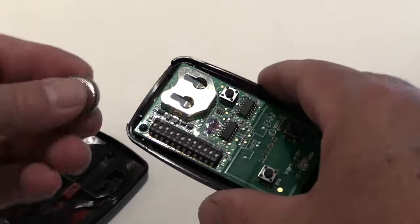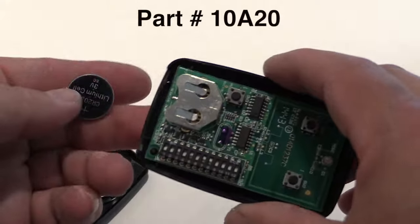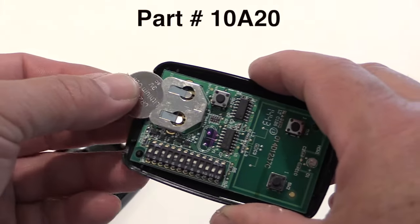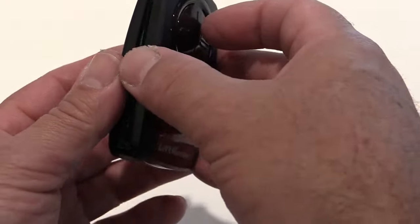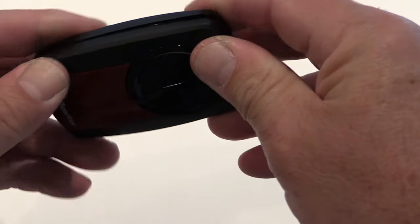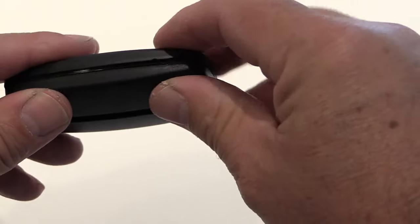The battery is available on our website. It's number 10A20. Once you get it, just push it back inside the slot and push it in. Make sure it's seated fully, and then line the case up and snap it back together. That's all there is to changing the battery.